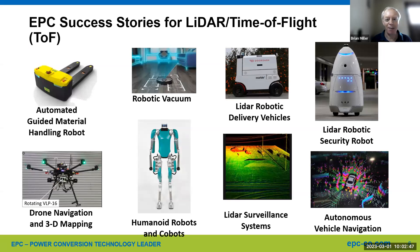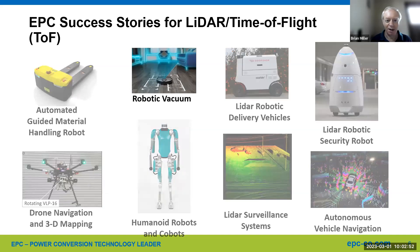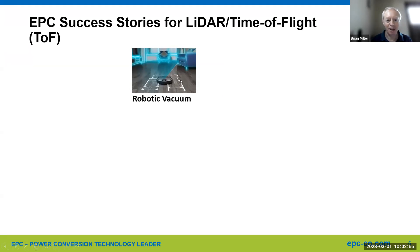First, the area of LIDAR and time of flight ranging — there are lots of products that would use this, today just robotic vacuums. You see here a picture of the robot mapping the area. A popular way is to use a laser for time of flight: the laser comes from the robotic vacuum, bounces off furniture and walls, and the reflected signal is detected by the vacuum. You can get very accurate measurement of the distance, so the vacuum can develop a floor plan of the house.